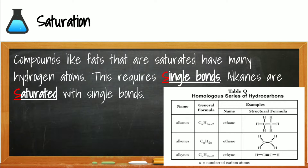When you have single bonds between the carbons, you have the maximum amount of hydrogen possible. Looking at reference table Q, you can see that alkanes have the most hydrogens per carbon than any other hydrocarbon series.